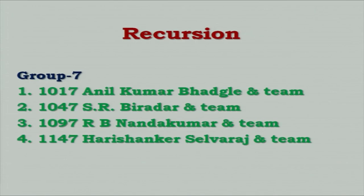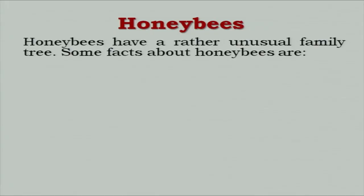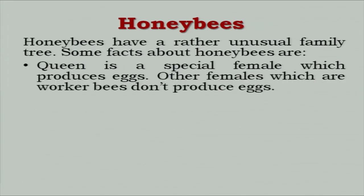The next group is group 7 presenting recursion. Good morning everybody. Our group has four groups working together. Three presented the same problem. Before that, I'll take a biological example — honey bees and how their family tree grows. Facts: queen is a special bee that only produces eggs; others are workers who don't produce eggs. A male is produced by a queen's unfertilized egg, whereas a female is produced when a queen mates with a male. So a male has only one parent and a female has two.